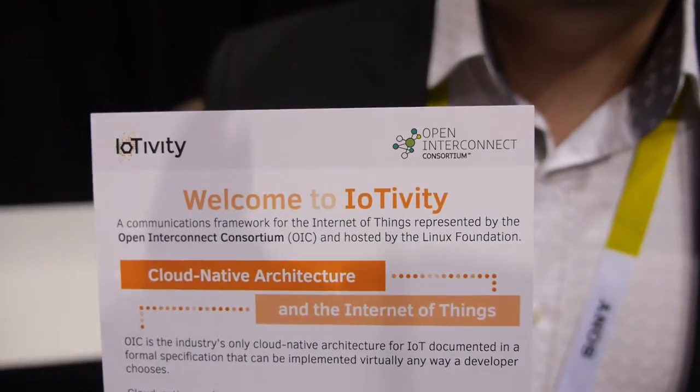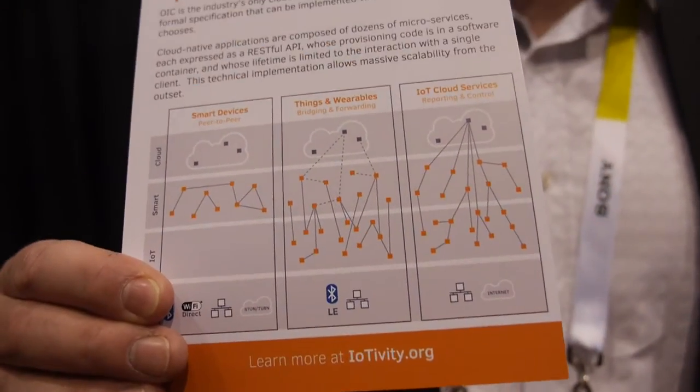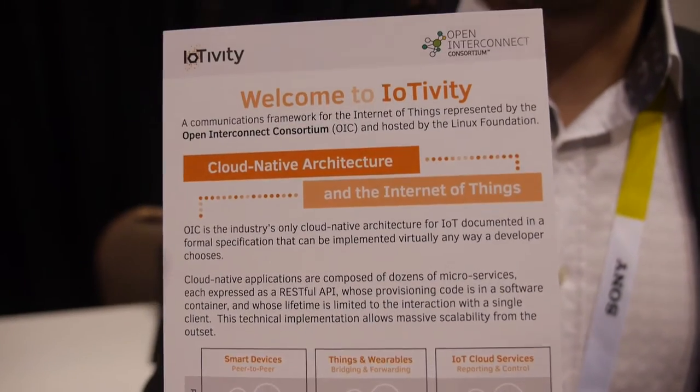We're trying to make it really simple. We've got a standard for the layers that software developers would talk to, and we've defined how those layers would then talk down to multiple different radios. We've also got translation layers to talk to other non-OIC devices. A developer or application provider only really needs to learn one thing — the OIC interface. We've also got an associated open source project called IoTivity, run by the Linux Foundation and sponsored by the Open Interconnect Consortium.